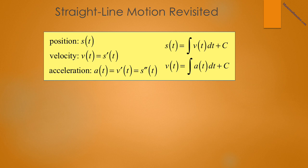In the first part of the course, studying differential calculus, we worked on straight line motion. We talked about the position function, which described where on a straight line a particle was based upon time t. The velocity was the change of position over time, v of t, defined as s prime of t, and the acceleration a of t was the derivative of v of t, v prime of t, or s double prime of t. We can now reverse the process in integral calculus, saying that s of t is the integral of v of t dt plus c, and v of t is equal to the integral of a of t dt plus c.